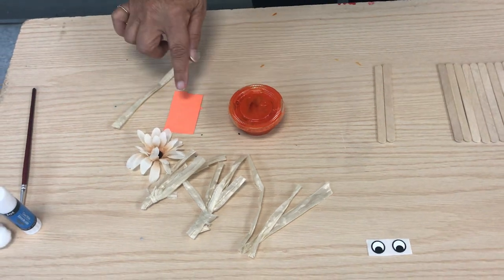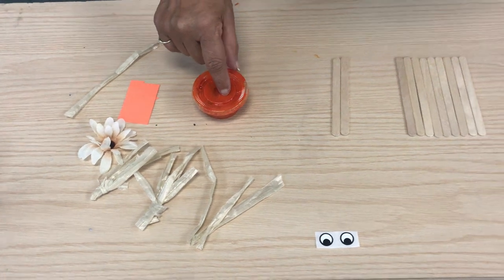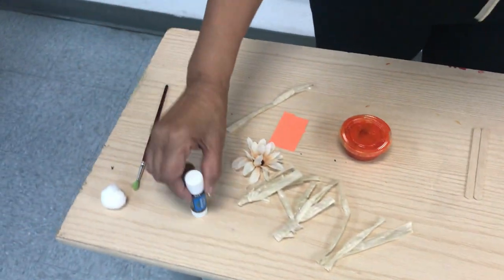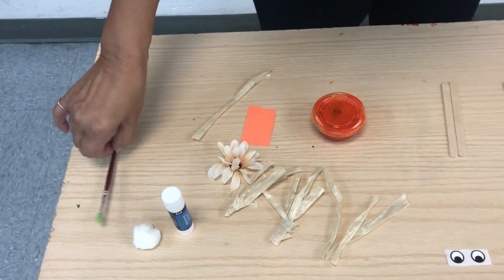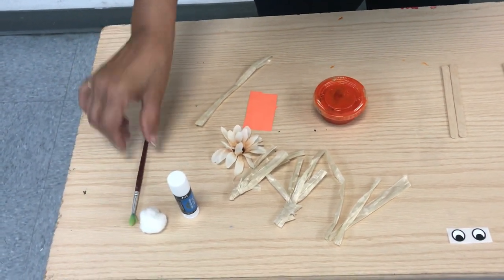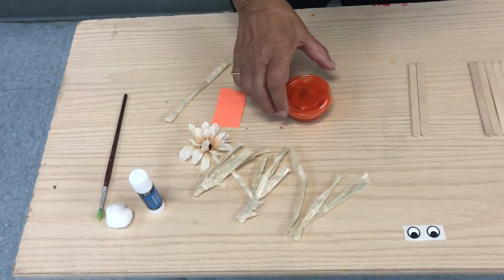An orange piece of paper. Un papel anaranjado. Orange paint. Y pintura anaranjada. You need your glue stick, a cotton ball, or if you have a brush you can use a brush. Van a necesitar pegamento y pueden usar algodón o un pincel.